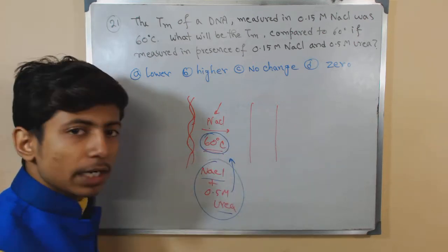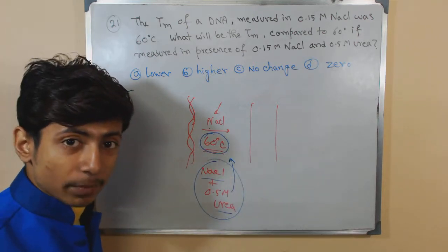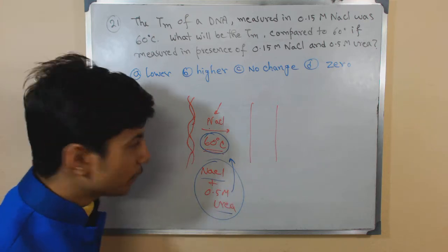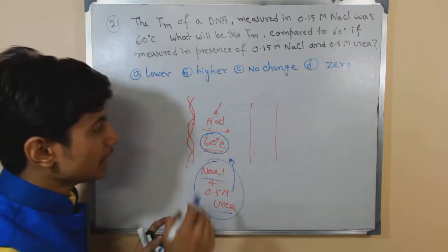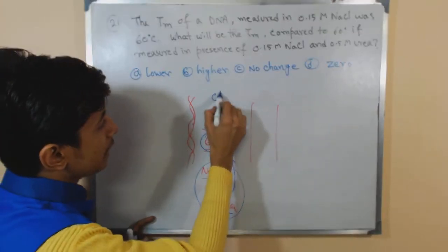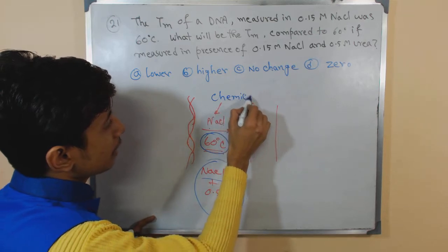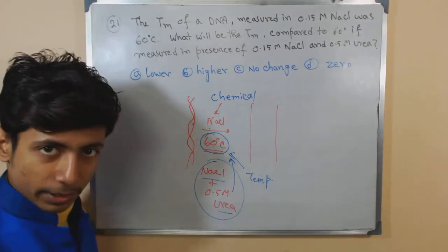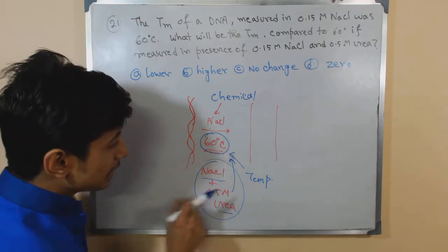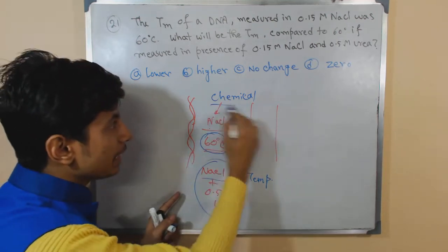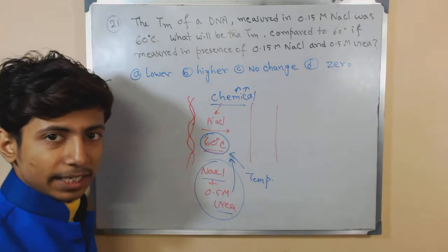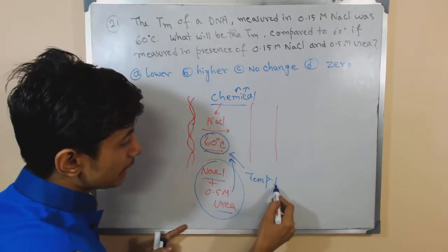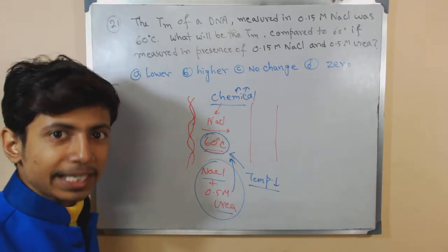So obviously what temperature will be required to separate this time? Obviously less temperature because in both cases we have two important ingredients. One is the chemical denaturing agents. Another is the temperature that is also a denaturing agent. So in this case if we add our chemical ingredients more to denature the DNA, obviously we take less temperature to do that.